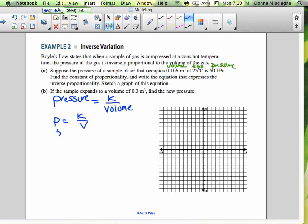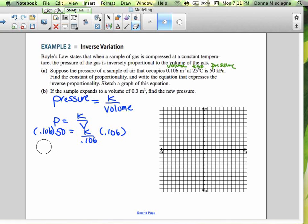P is 50. K is what we're solving for. That's our constant of proportionality. And the volume here is 0.106. If we want to solve for k, we just multiply both sides by 0.106. So we have 50 times 0.106 equals k. And that means k is equal to 5.3.